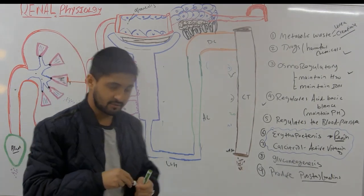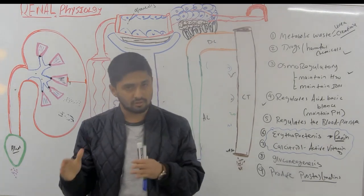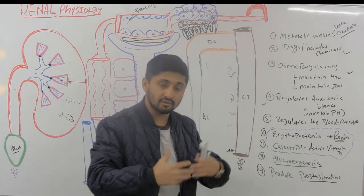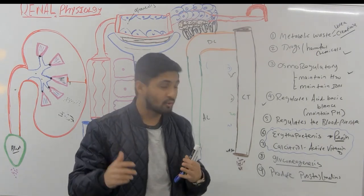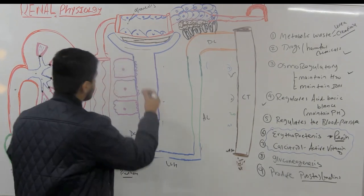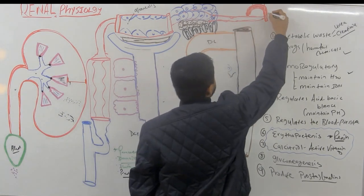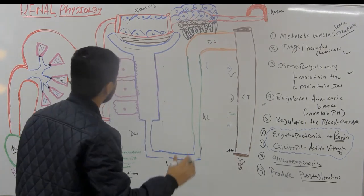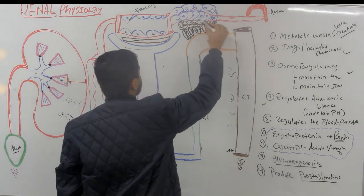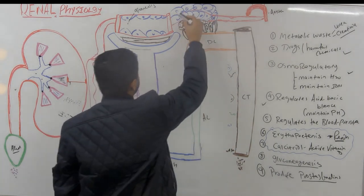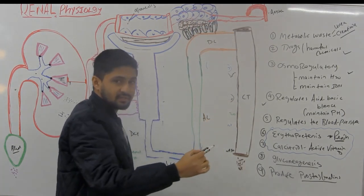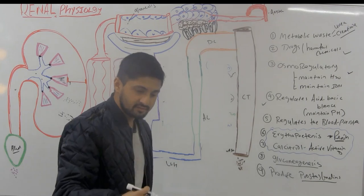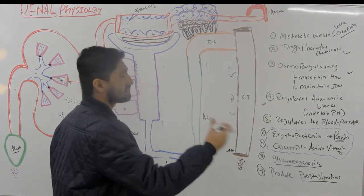Kidney also regulates blood pressure two ways — a short way and a long way. The long way involves reabsorption of electrolytes, which takes time. The short way: the afferent arterioles have specialized smooth muscle cells called granular cells because they contain granules. Those granules contain a very important enzyme called renin.